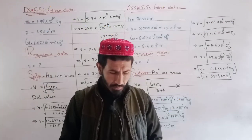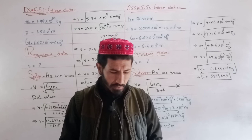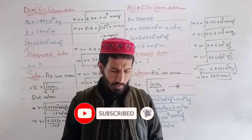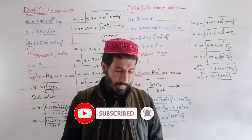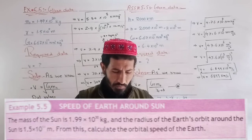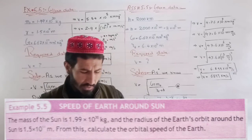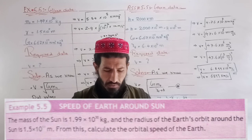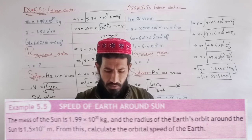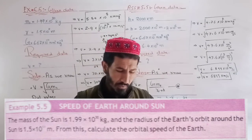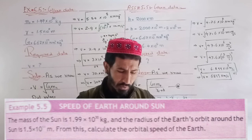Bismillah Ar-Rahman Ar-Raheem. In the next lecture, we have Example 5.5: the speed of Earth around the Sun. The mass of the Sun is 1.99 × 10^30 kg, and the radius of Earth's orbit around the Sun is 1.5 × 10^11 meters.